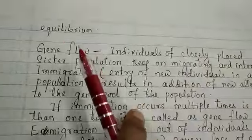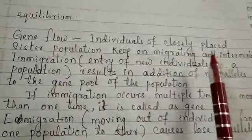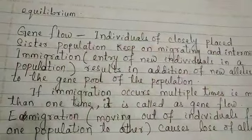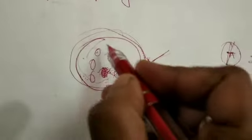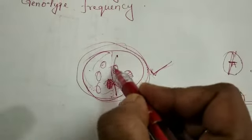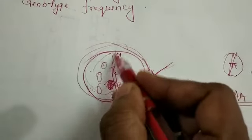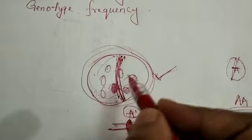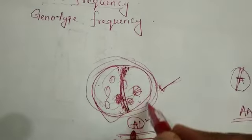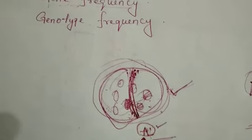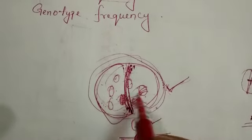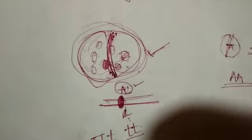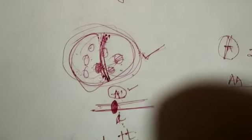Let us discuss gene flow. First, sister populations: consider one population that was divided into two halves because of some barrier in between — for example, water came inside and separated the two populations. Because these populations have more or less the same type of individuals, we call them sister populations.